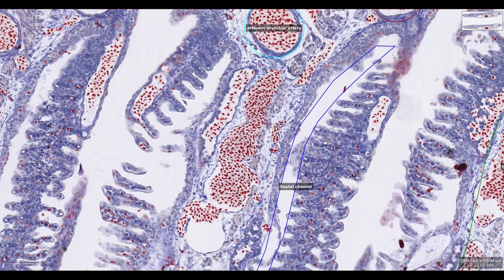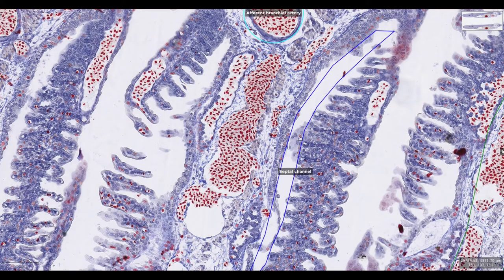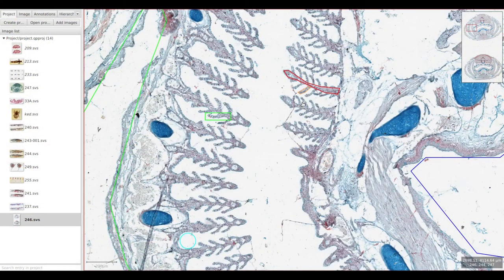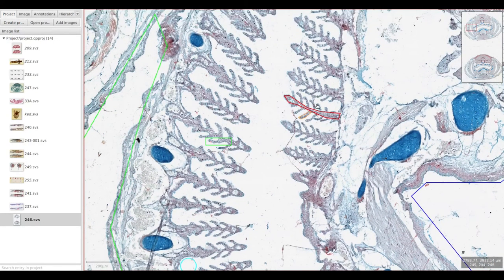Between the interbranchial septum and the hemibranch there is a space for the water to flow called the septal channel. If we switch to a transverse section like slide 246, we can see the functional unit of the gill much better.